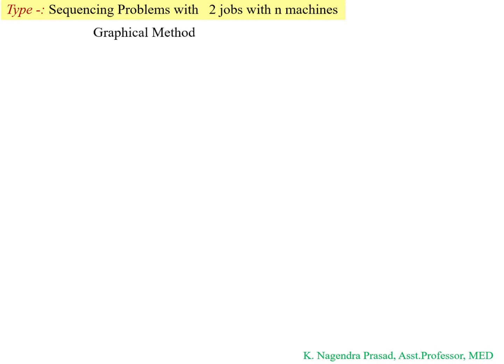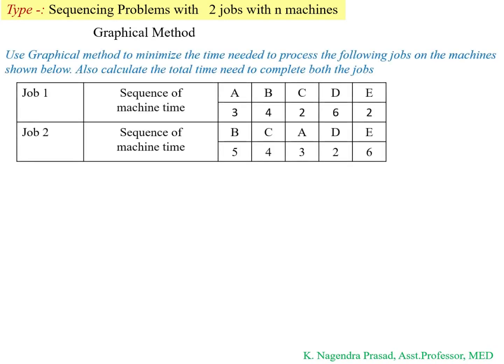The given data has two jobs — Job 1 and Job 2 — and more than two machines: Machine A, B, C, D, and E. We have to find the sequence of machines which minimizes the total elapsed time. This can be solved by the graphical method using the following steps.